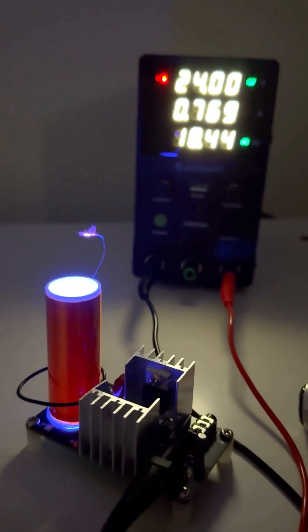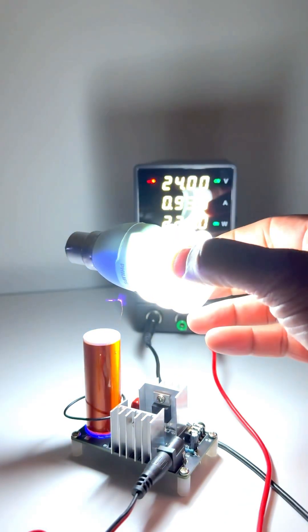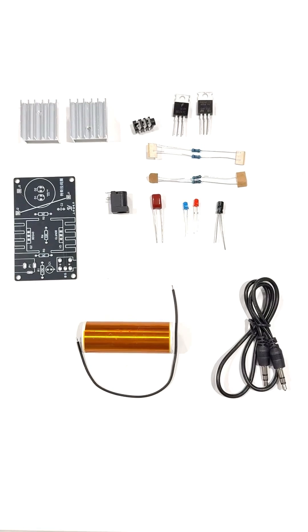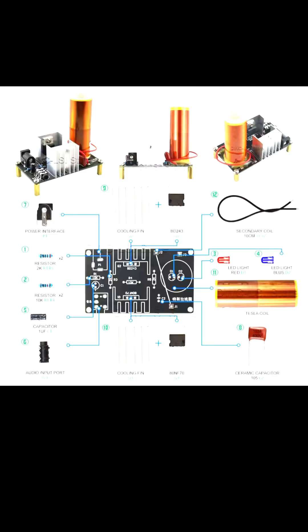Want to build your own Tesla coil? Let's do it. First, gather your materials as per the diagram and a 24V power supply.